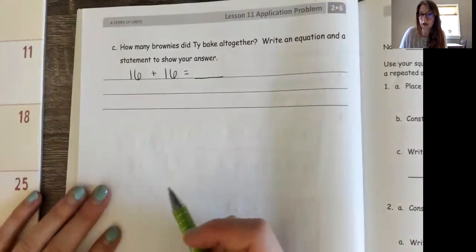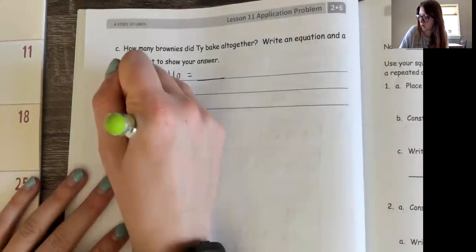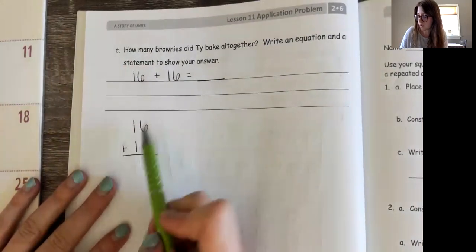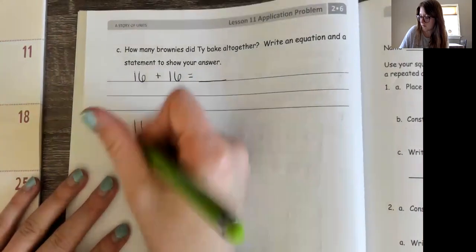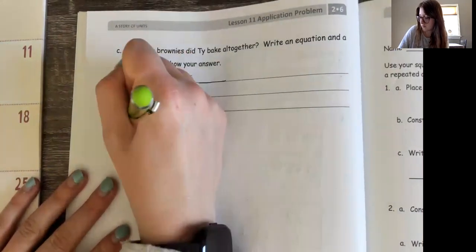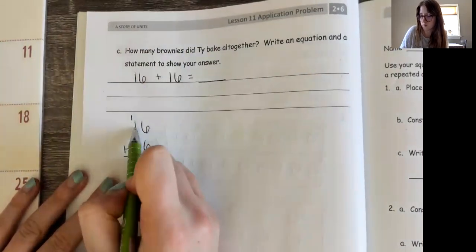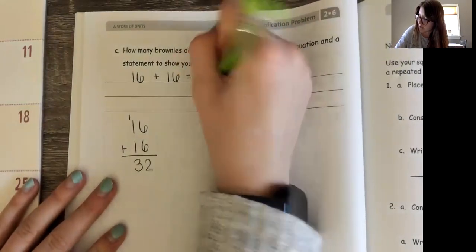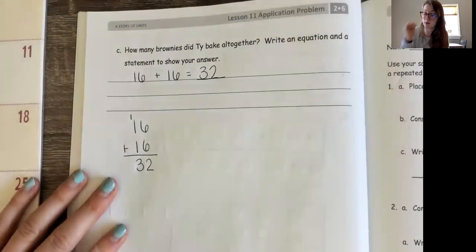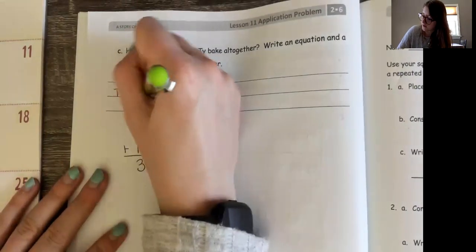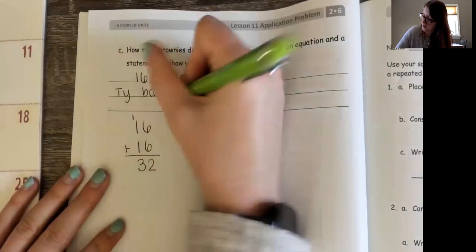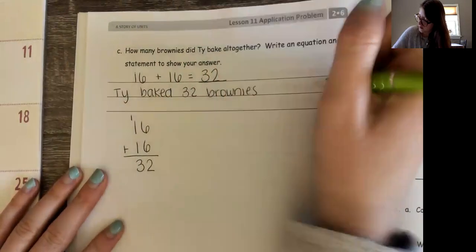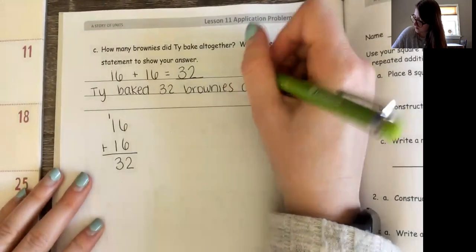If I can't do that in my head I can use different strategies. I'm going to write it in the algorithm way, stacking on top of each other. Six plus six, starting in the ones place, is 12 — put the two and carry the ten. One plus one is two, plus one more is three. So all together Ty baked 32 brownies. My sentence is going to say: Ty baked 32 brownies all together.